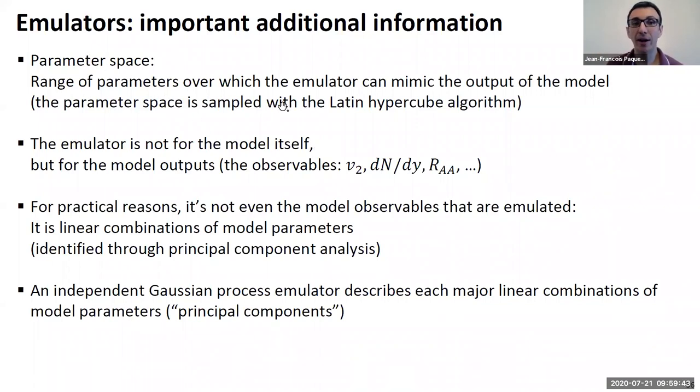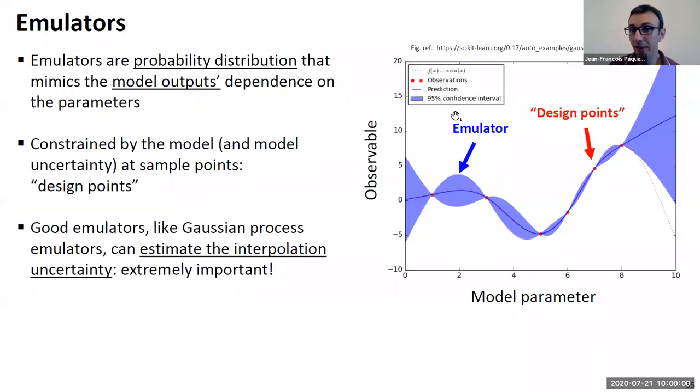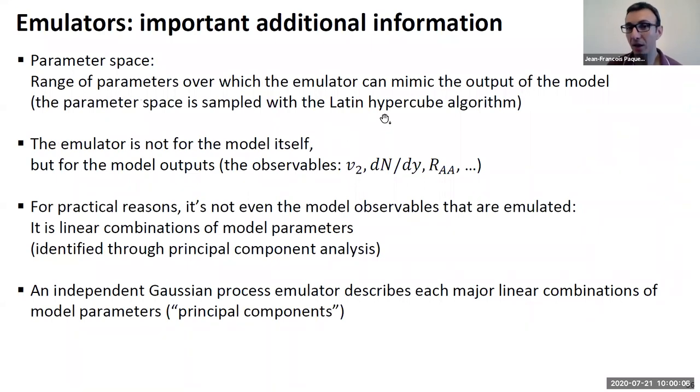So the first thing you do is that you define your parameter space. So you essentially define your prior, you define over what range of parameters you want to study your model. And what you'll do is that you'll sample your parameter space. So you'll decide on which points in parameters you will be evaluating your model. And these points correspond to these points here. Now, this is typically done with some algorithm that tries to spread the points as much as possible over the parameter space. So you don't want two design points to be very close to each other. So typically people use something like a Latin hypercube algorithm to spread your points across the parameter space.